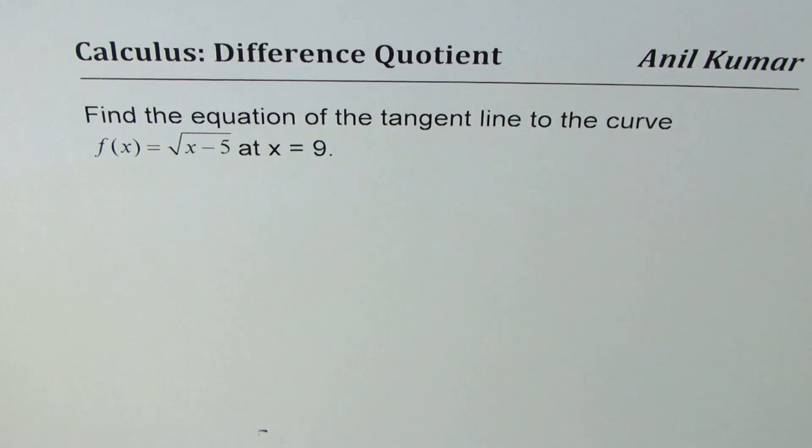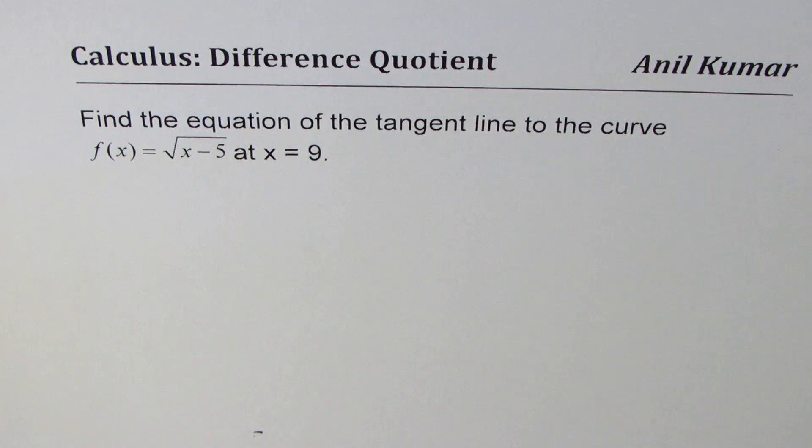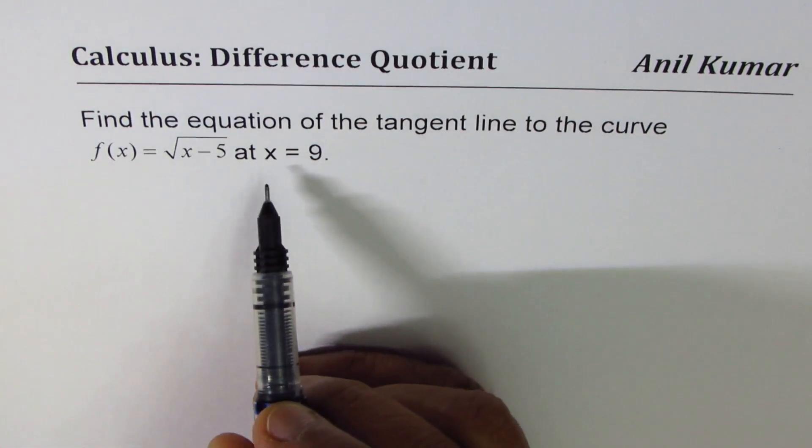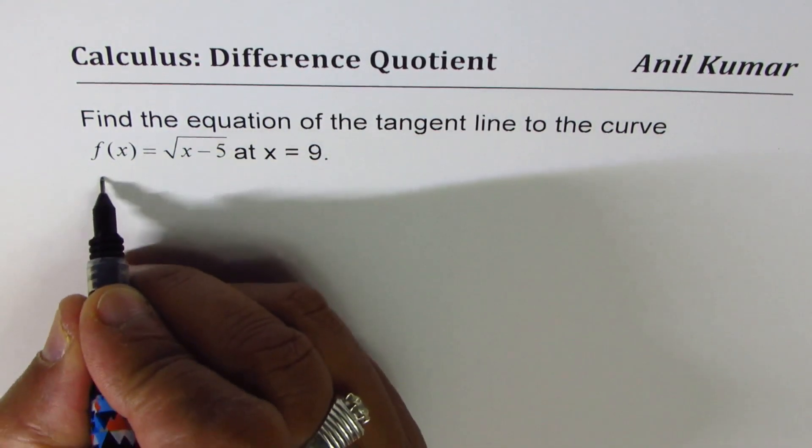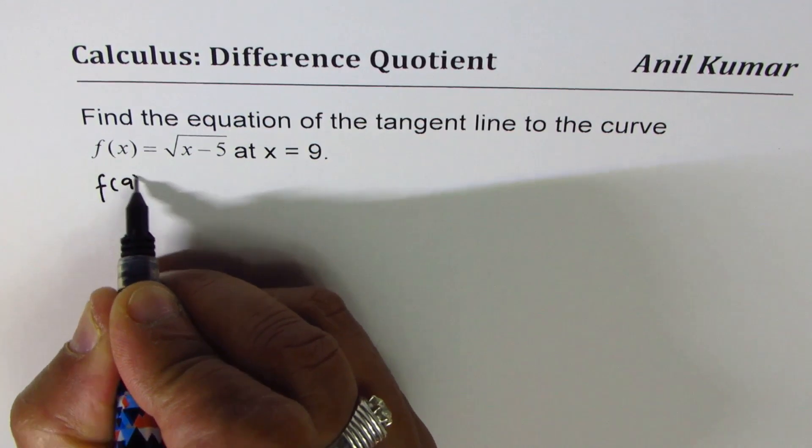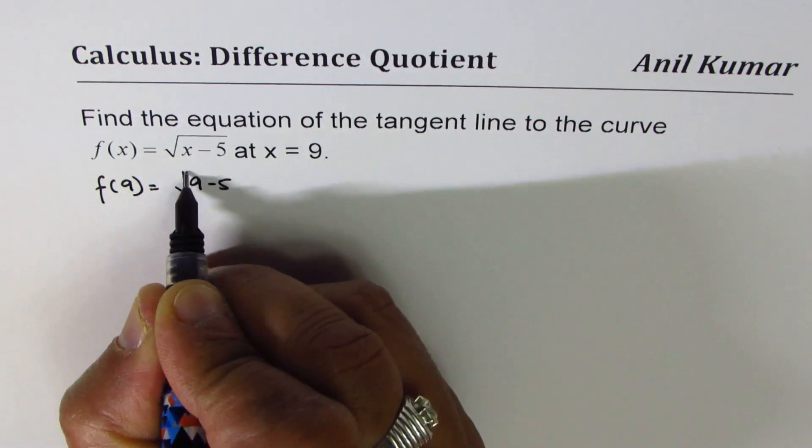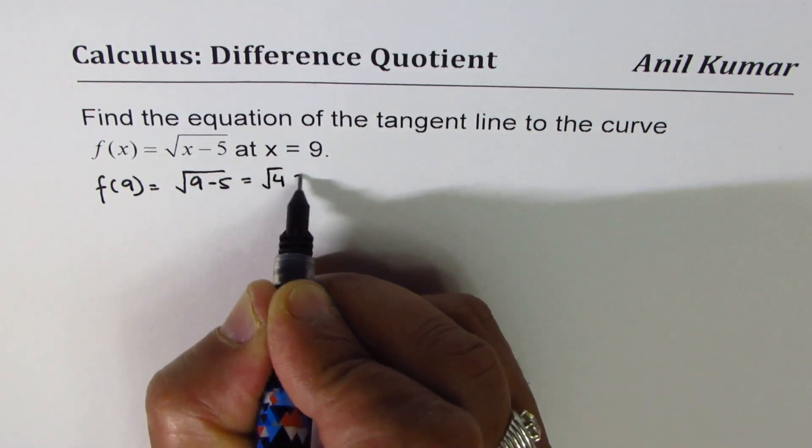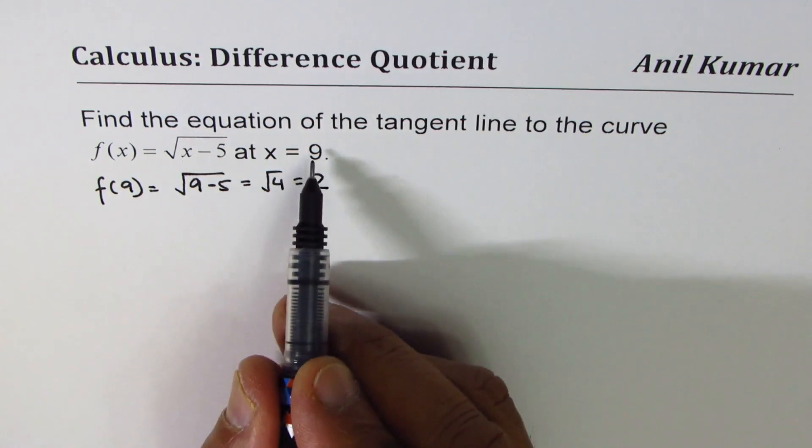The question here is, find the equation of tangent line to the curve f(x) equals square root of x minus 5 at x equals 9. Now at x equals 9, it is good to know what y value is. So let's first find f(9). So f(9) is square root of 9 minus 5, which is square root of 4, which is 2. So the point is (9, 2).